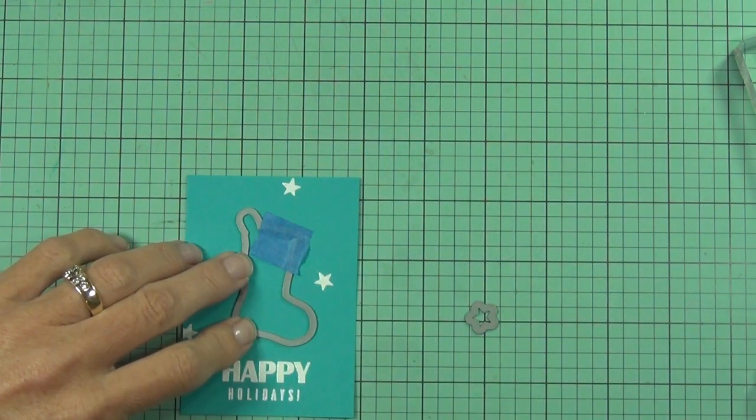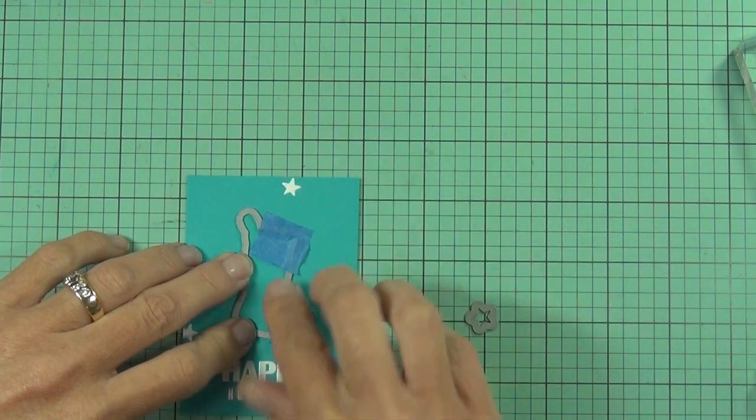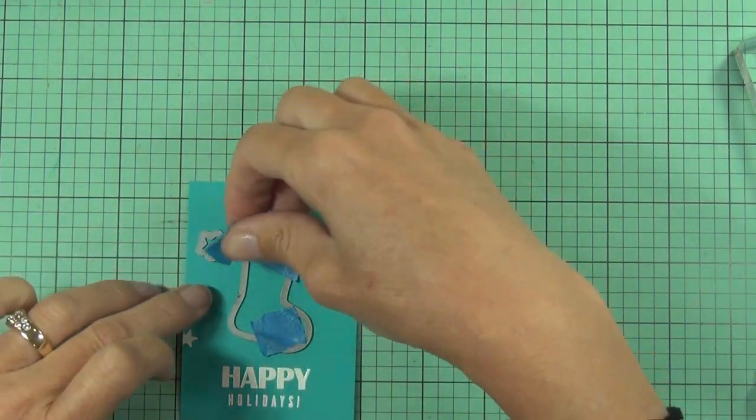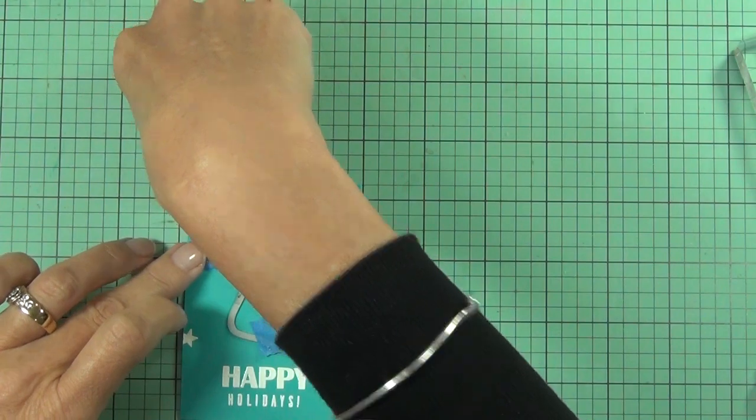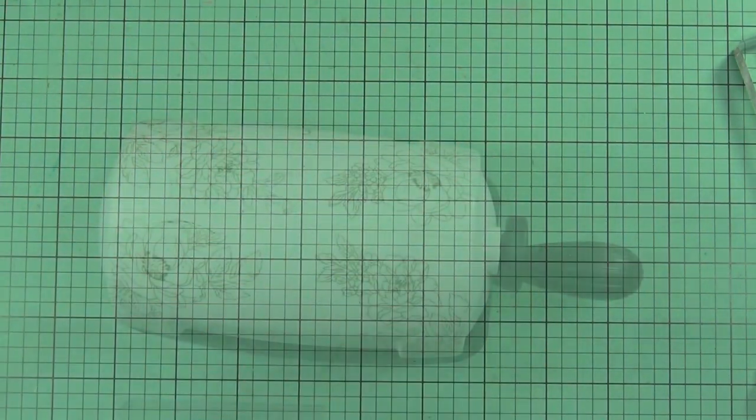I just place the die-cut where I am wanting my stocking to be and this is doing it a little bit backwards, this is how I find it easiest to do this kind of a technique.